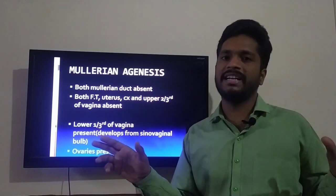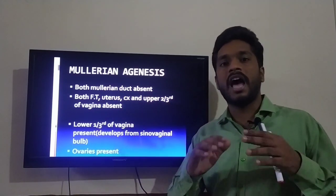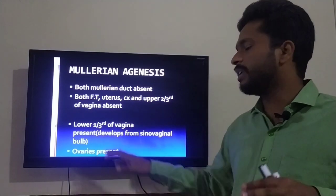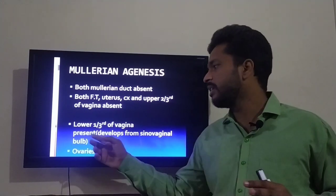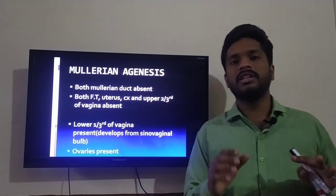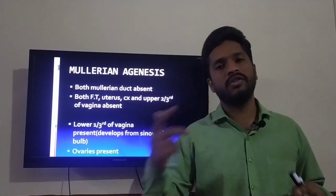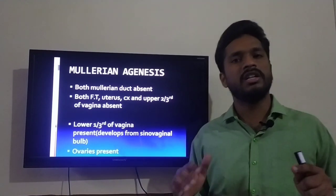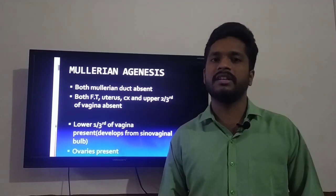Both fallopian tubes — right and left — will be absent, along with the whole uterus, whole cervix, and the upper two-thirds of the vagina. However, the lower one-third of the vagina will be present because it develops from the sinovaginal bulb, not the Mullerian duct. The ovaries are also not derived from the Mullerian duct, so they will also be present.